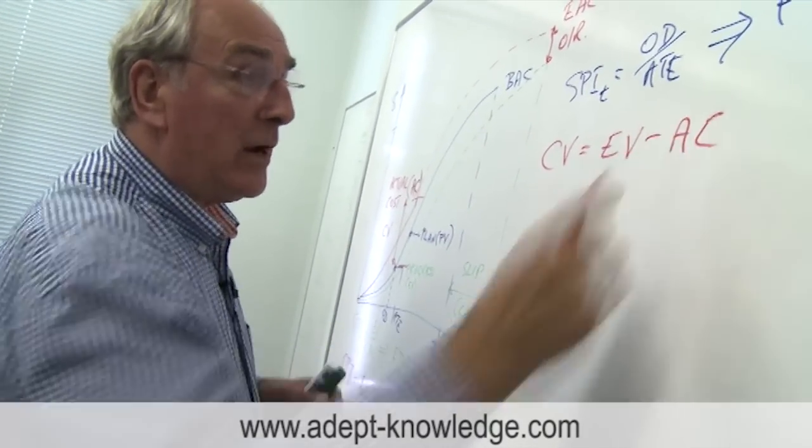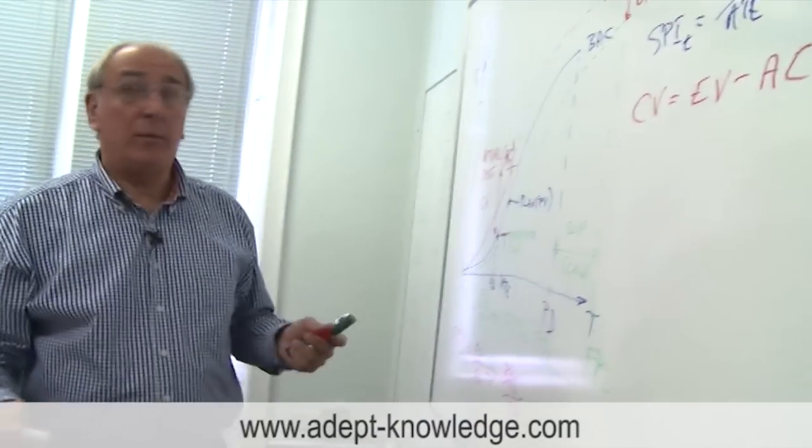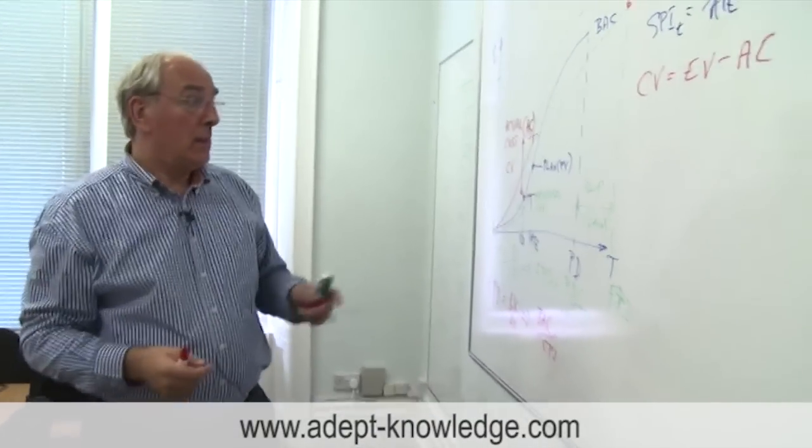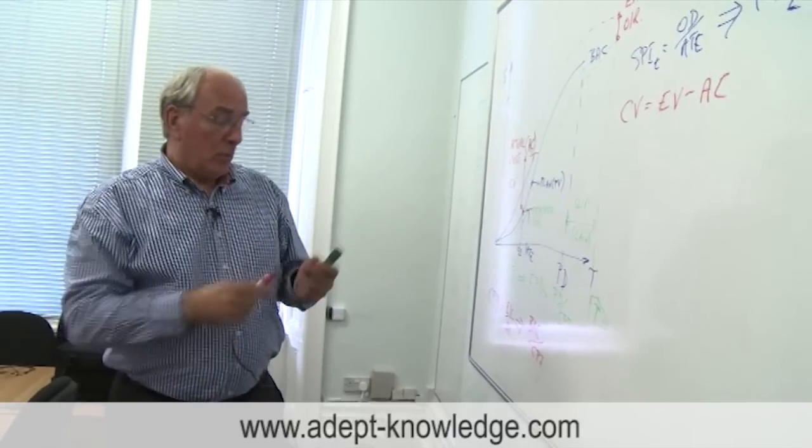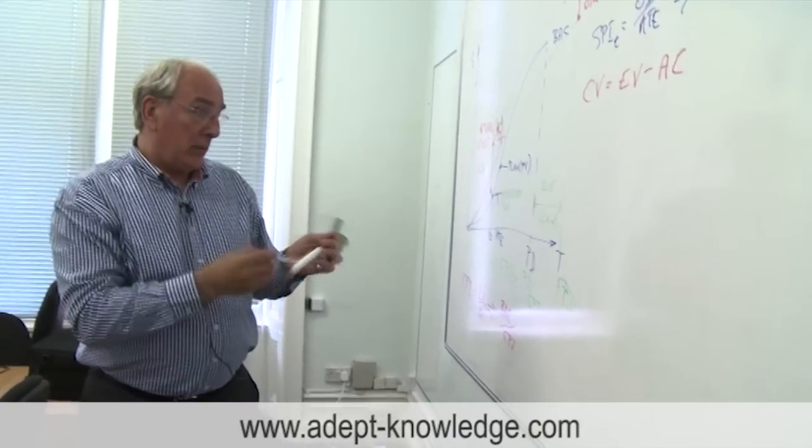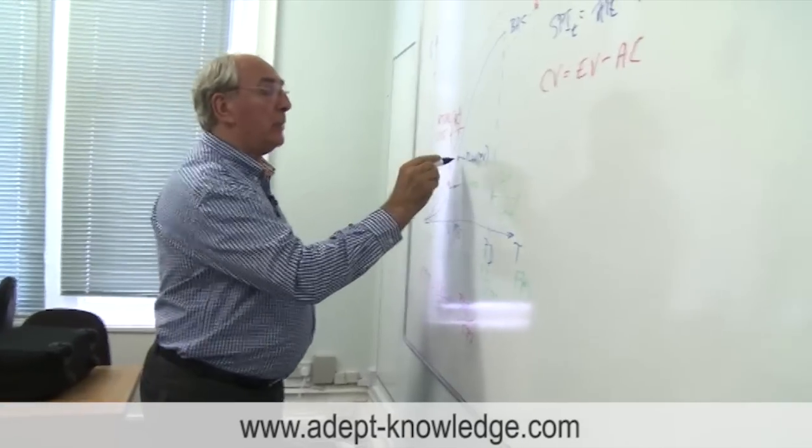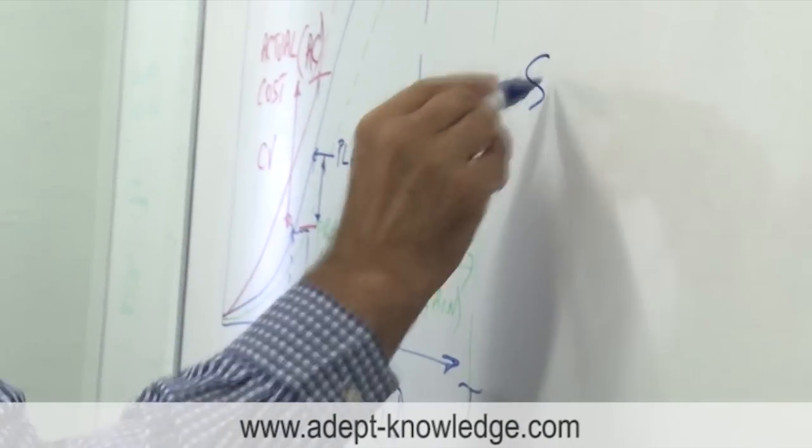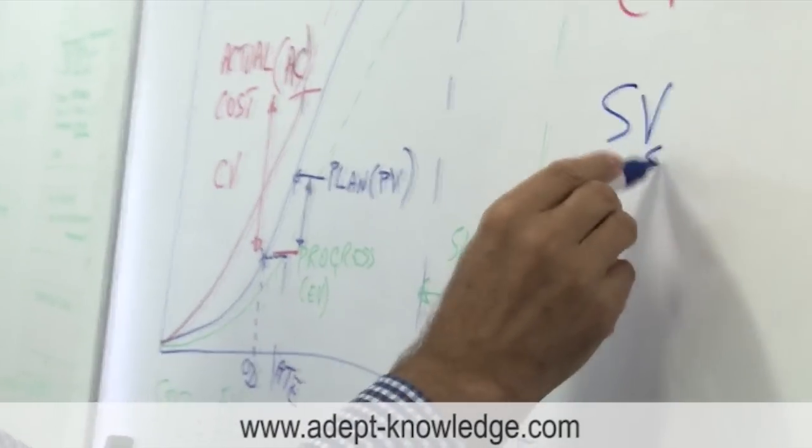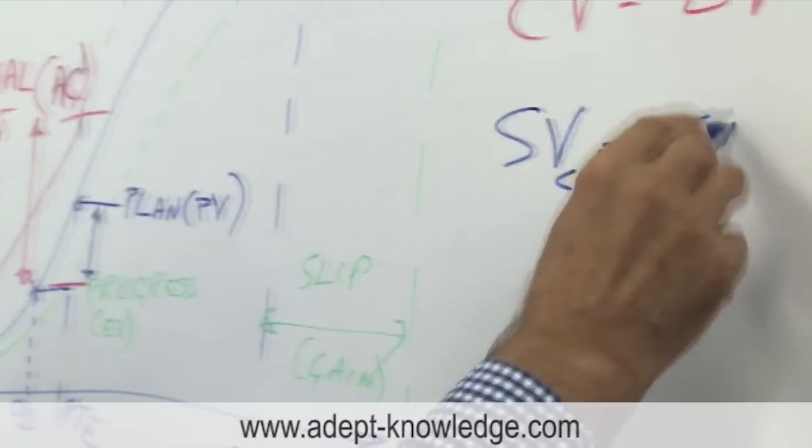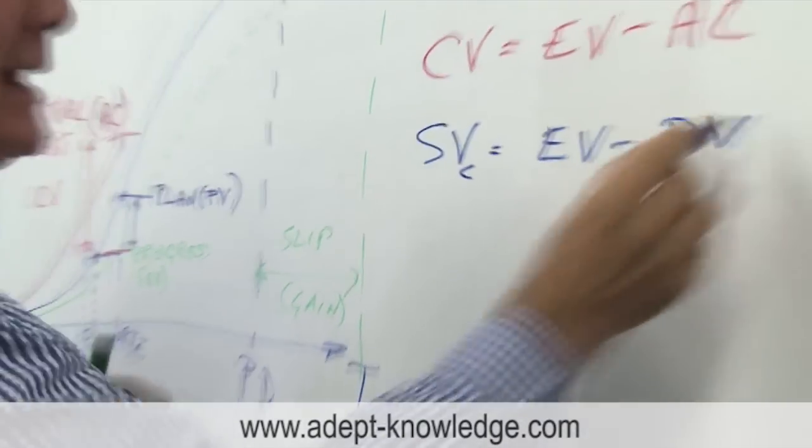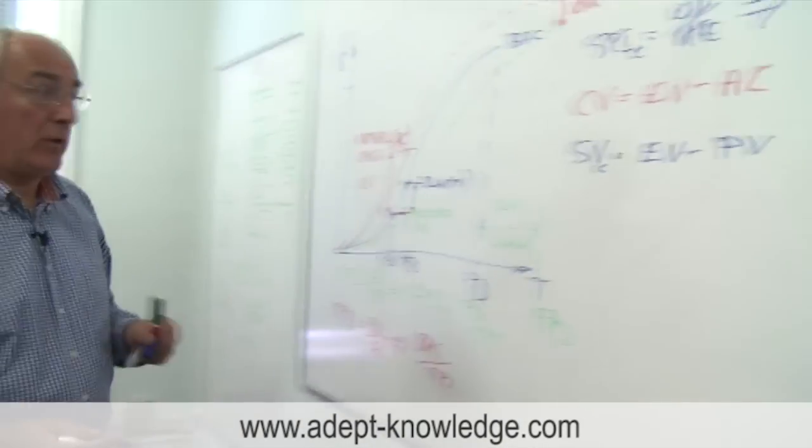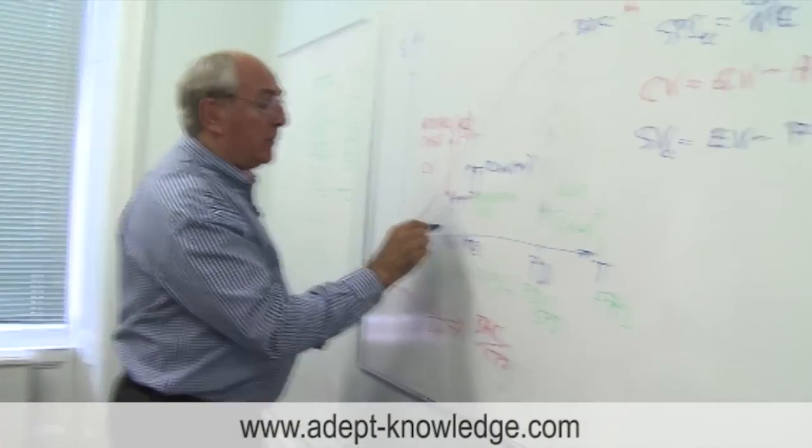The negative variance is adverse, means it's a bad deal. So this is a failing project. The other variance that would attract some attention would be this one here, the variance between the plan and the earned value, and again that's known as the schedule variance. This time it's on cost, so that would be the earned value minus the plan value, again negative showing an adverse variance.